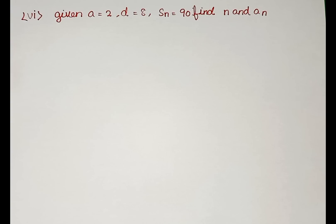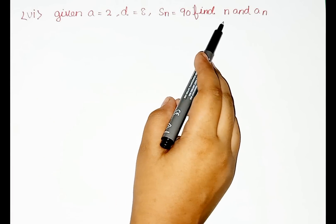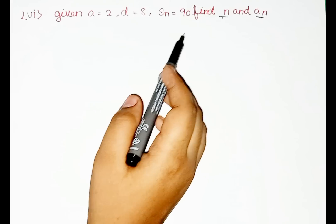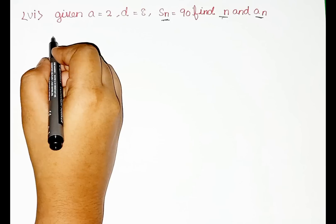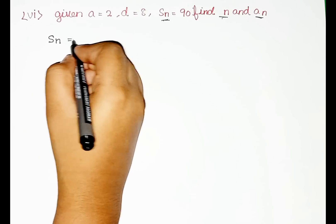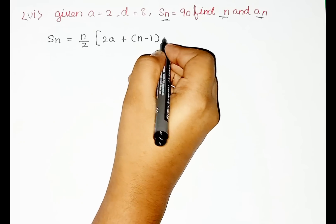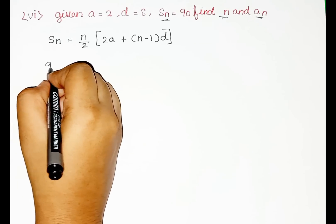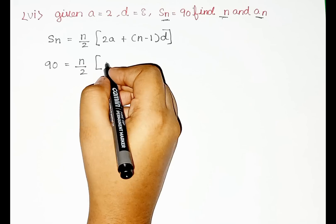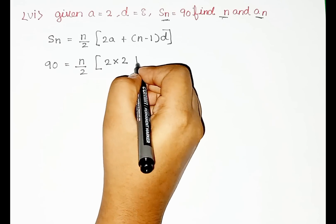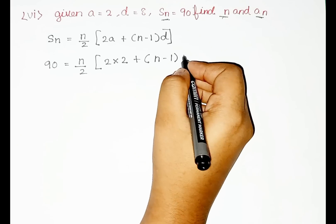Now let us solve the 6th subdivision. According to the 6th subdivision, we have the A value, D value, and SN value, but we have to find the N value and AN value. So here we have the SN value, so let us apply the SN formula: SN is equal to N by 2 bracket 2A plus N minus 1 into D. The SN value is 90, and the A value is 2, the D value is 8.